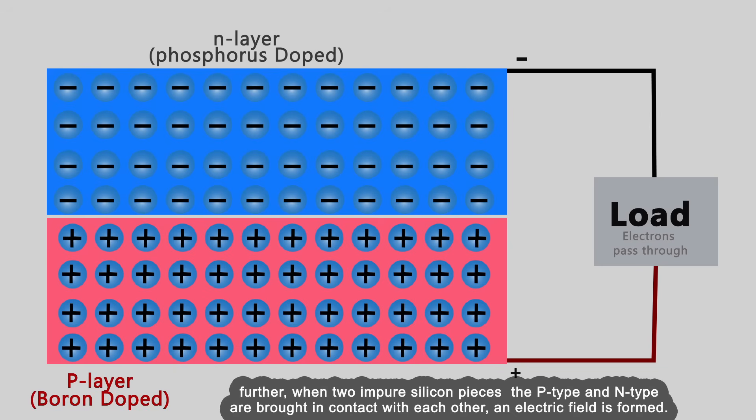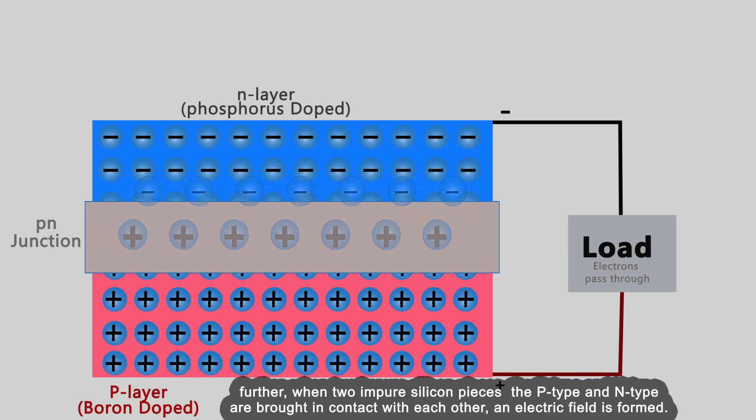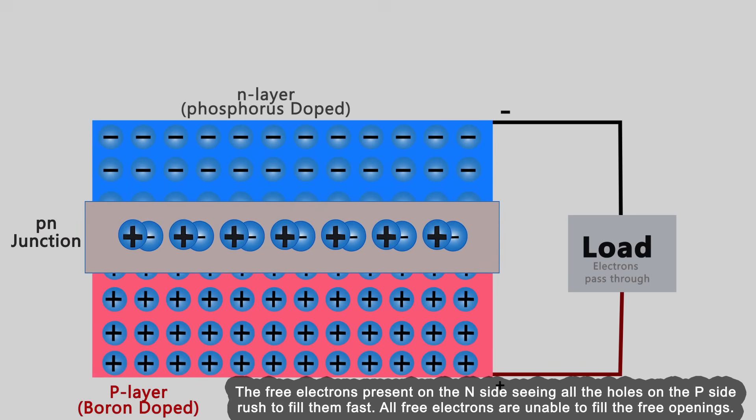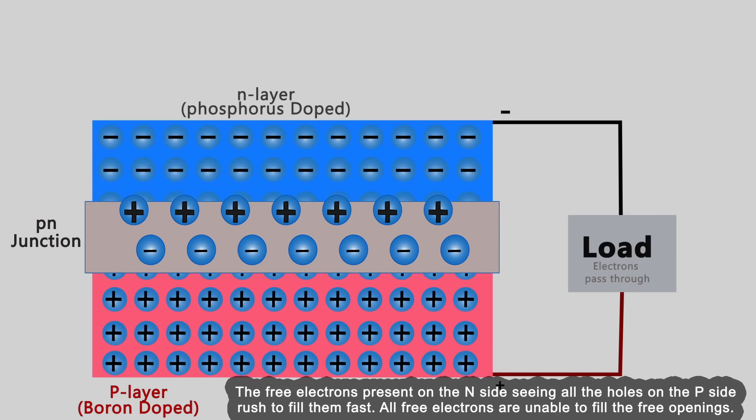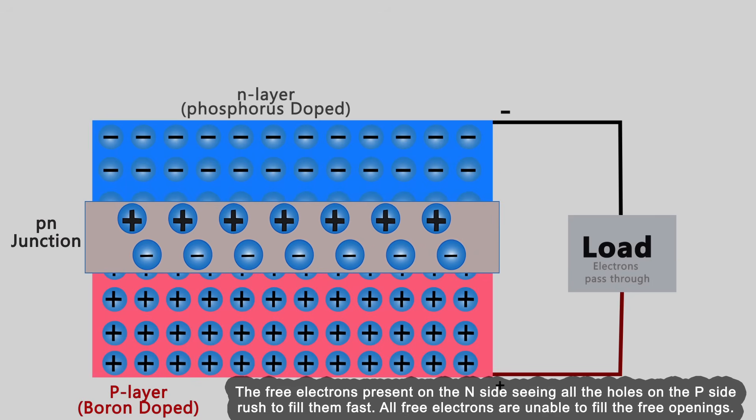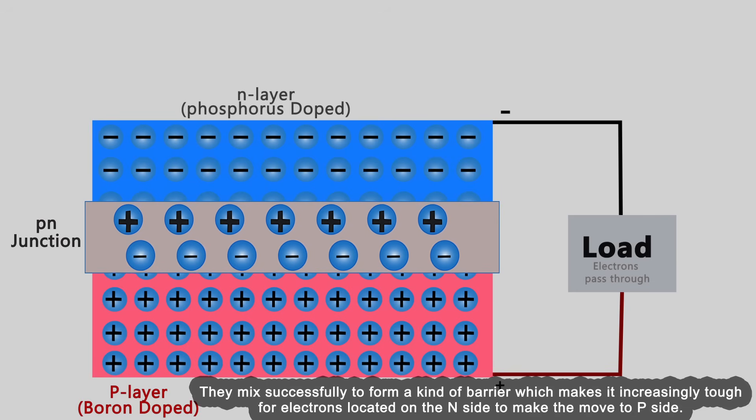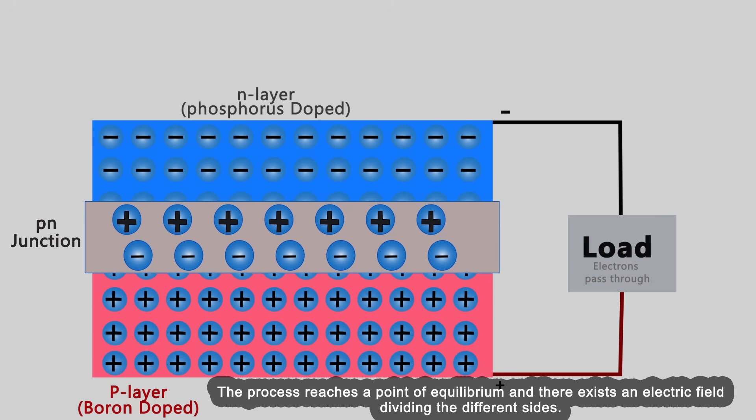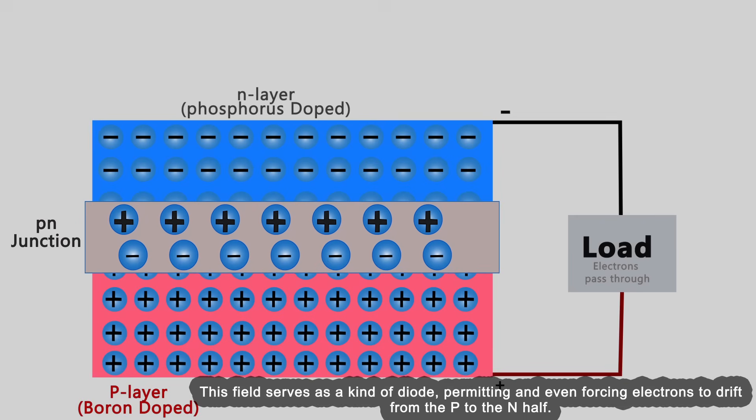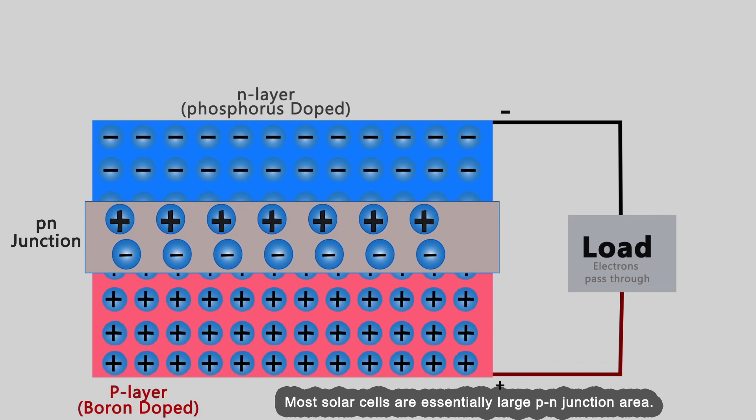When two impure silicon pieces, the p-type and n-type, are brought in contact, an electric field is formed. Free electrons on the n-side rush to fill holes on the p-side. They mix to form a kind of barrier which makes it increasingly tough for electrons on the n-side to move to the p-side. The process reaches equilibrium and there exists an electric field dividing the different sides. This field serves as a kind of diode, permitting and forcing electrons to drift from the p to the n half. Most solar cells are essentially large p-n junction areas.